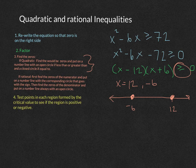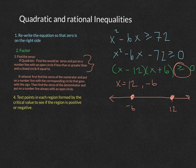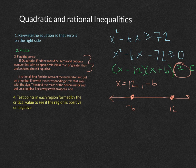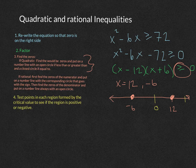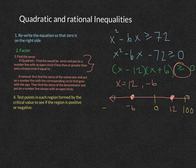Step 4 is to test regions formed by the critical values to see if the region is positive or negative. So I have something happening to the left of negative 6, in between negative 6 and 12, and then to the right of 12. So I'm going to pick values that are in between negative 6 and 12. I'm going to pick 0. I'm going to pick 100, and I'm going to pick negative 100.